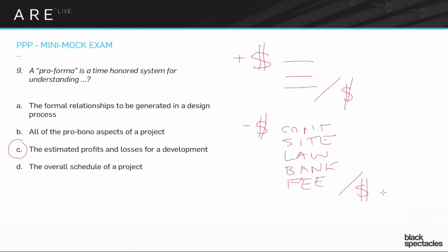The idea, presumably if it's a for-profit development, is that the cost numbers are going to be lower than our positive numbers. That's all a pro forma is. It can be as simple as on the back of a napkin — ten numbers added together and subtracted. It can also be something that's 50 pages long, depending on what's going on.